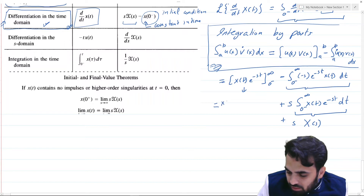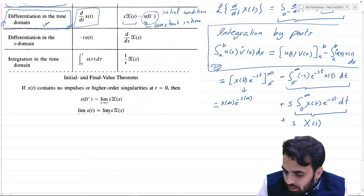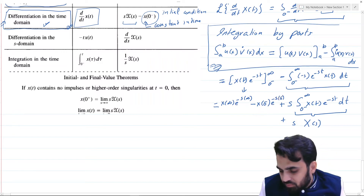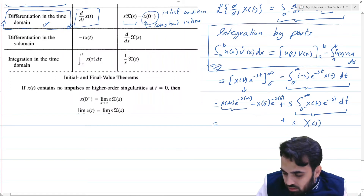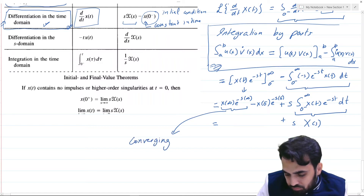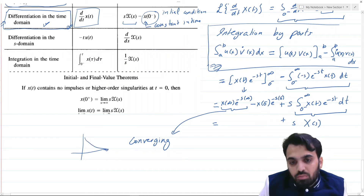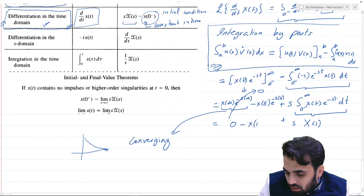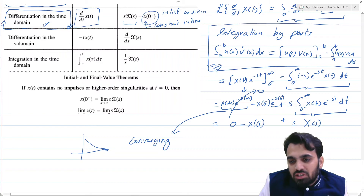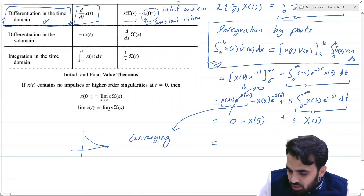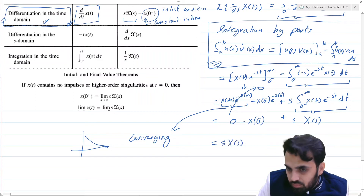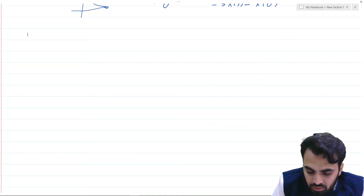The boundary term expands to x(∞)·e^(−s·∞) minus x(0⁻)·e^(−s·0⁻). For the region of convergence to hold, the transform must converge, so at time infinity this term is zero. The exponential e^(−s·0⁻) approaches one, leaving simply −x(0⁻). Therefore the full result is s·X(s) minus x(0⁻), confirming the differentiation property.